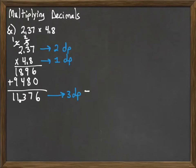We count three places on our number and then we insert our decimal point. And that's all there is to multiplying decimals.